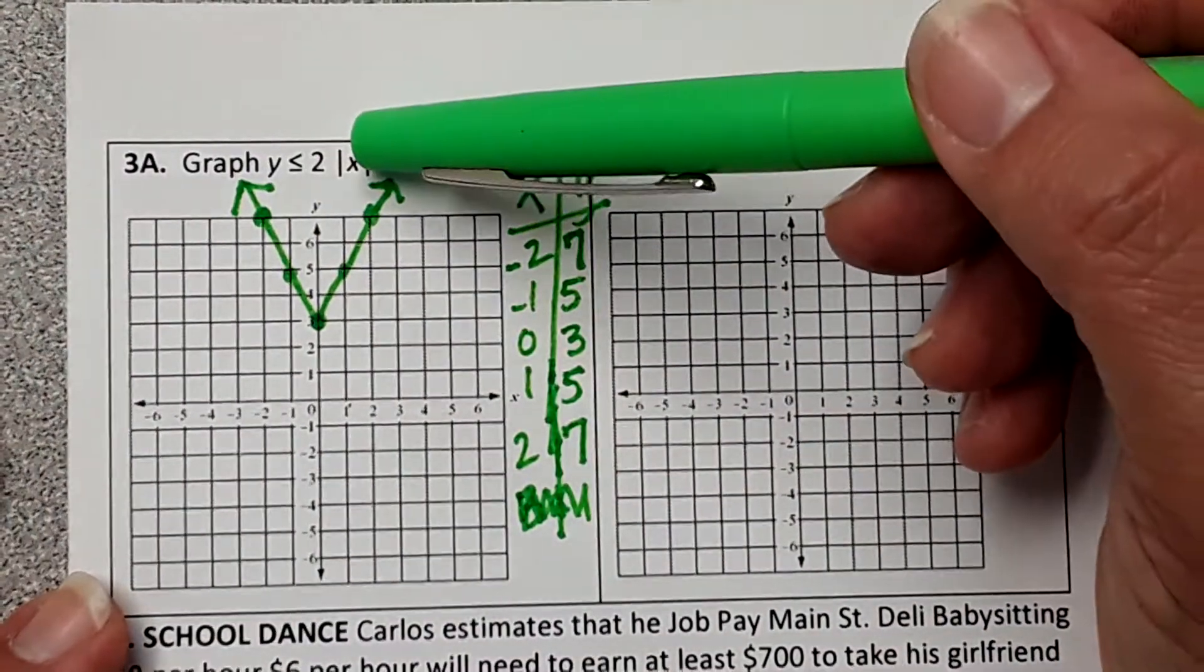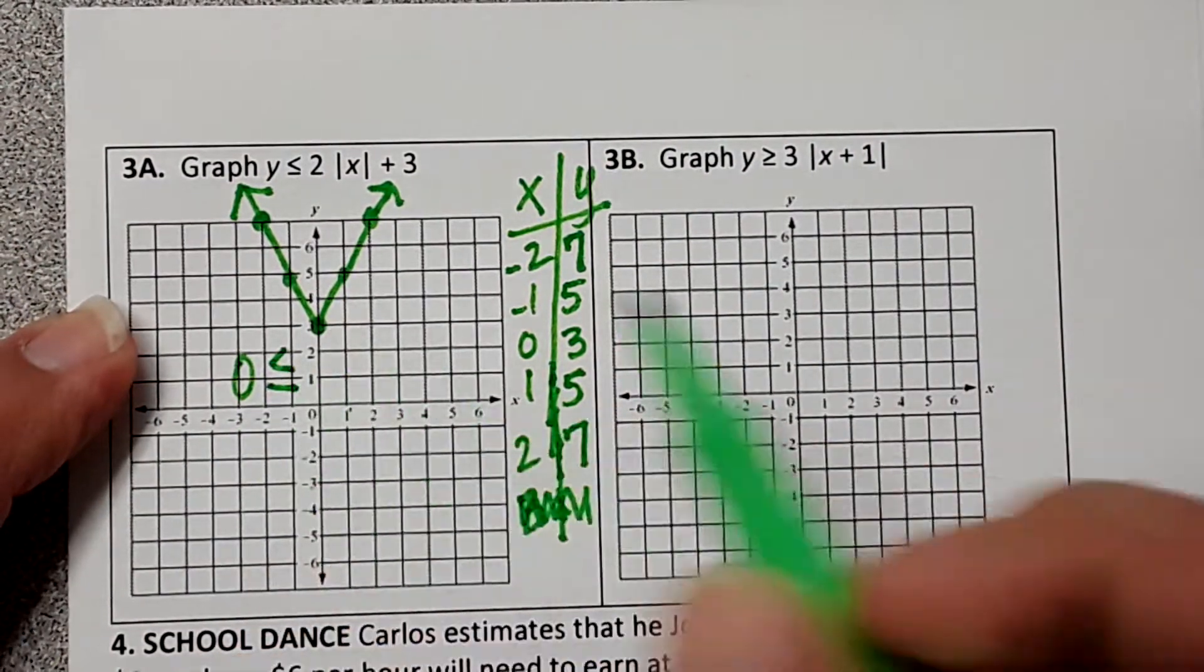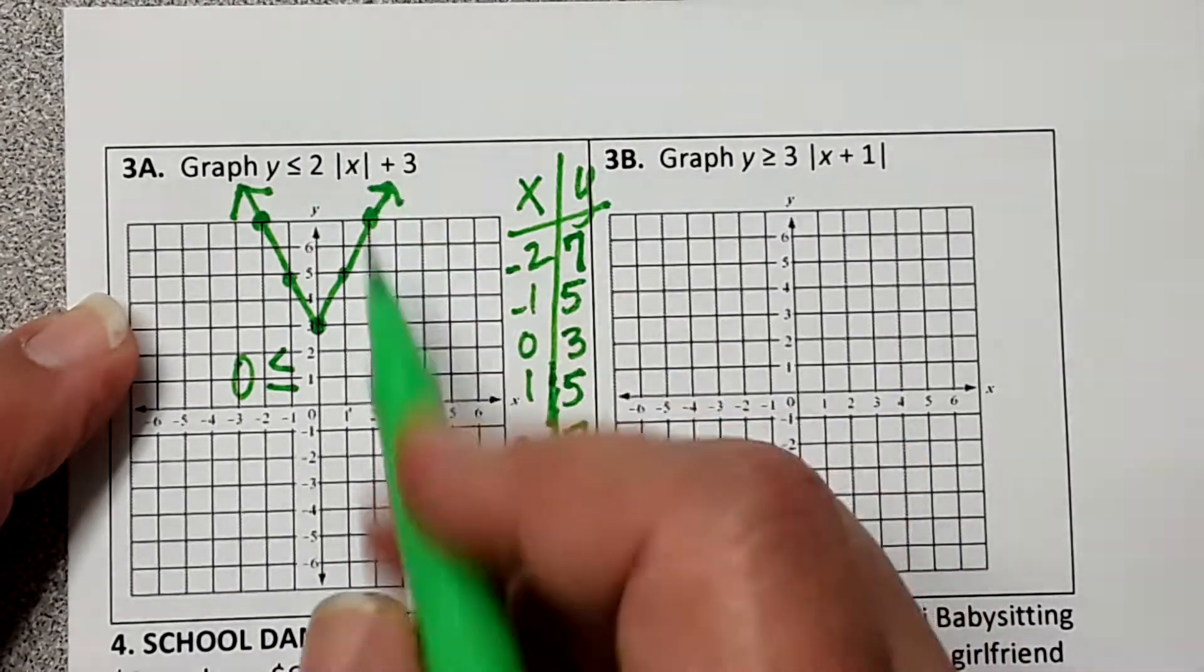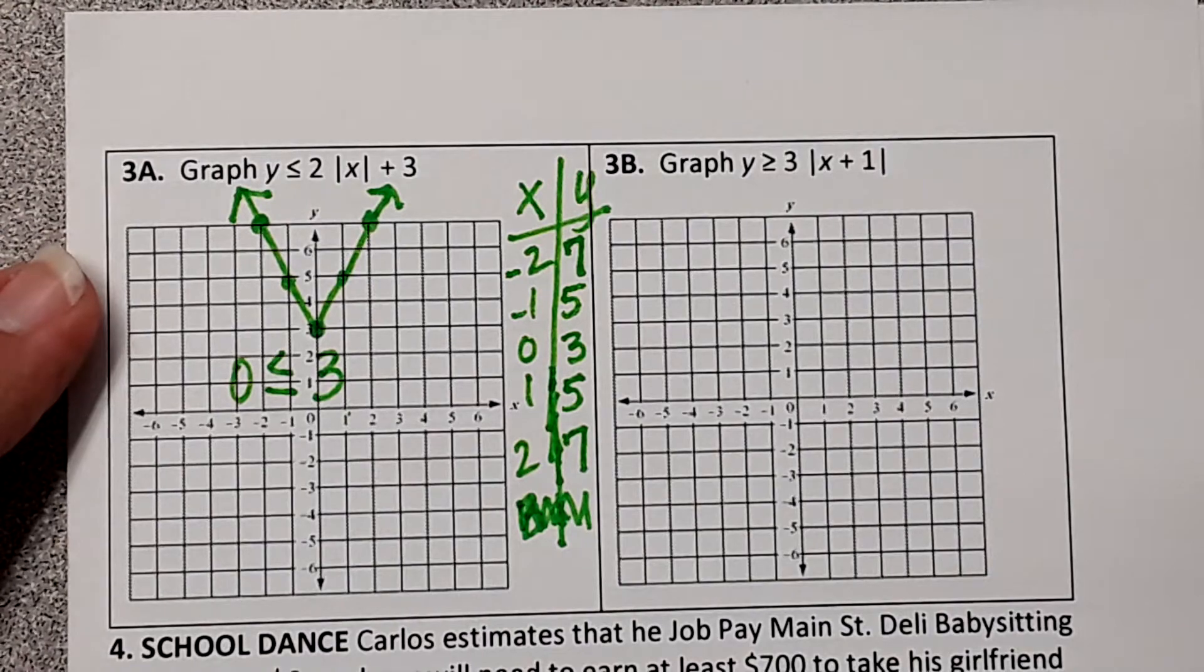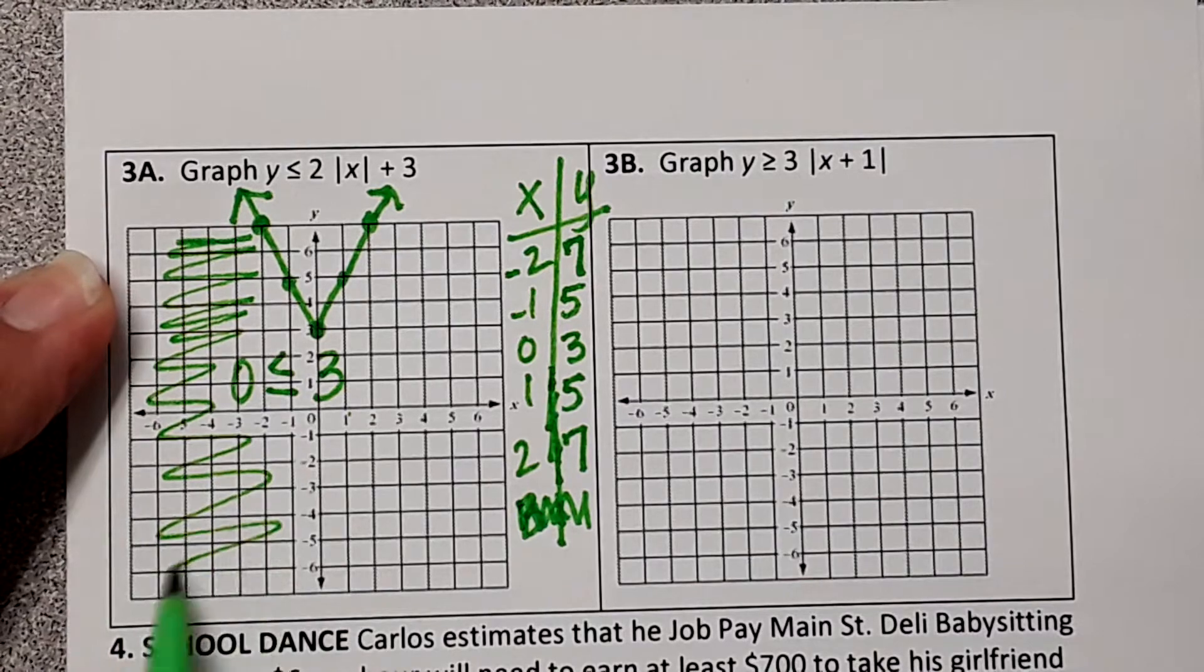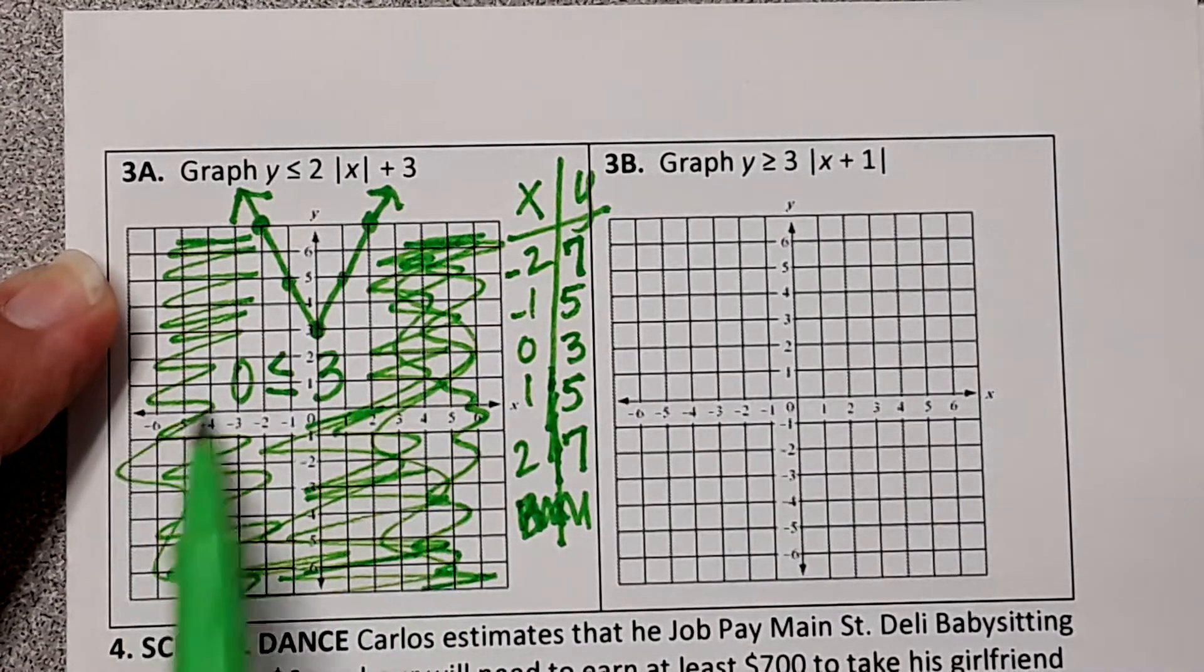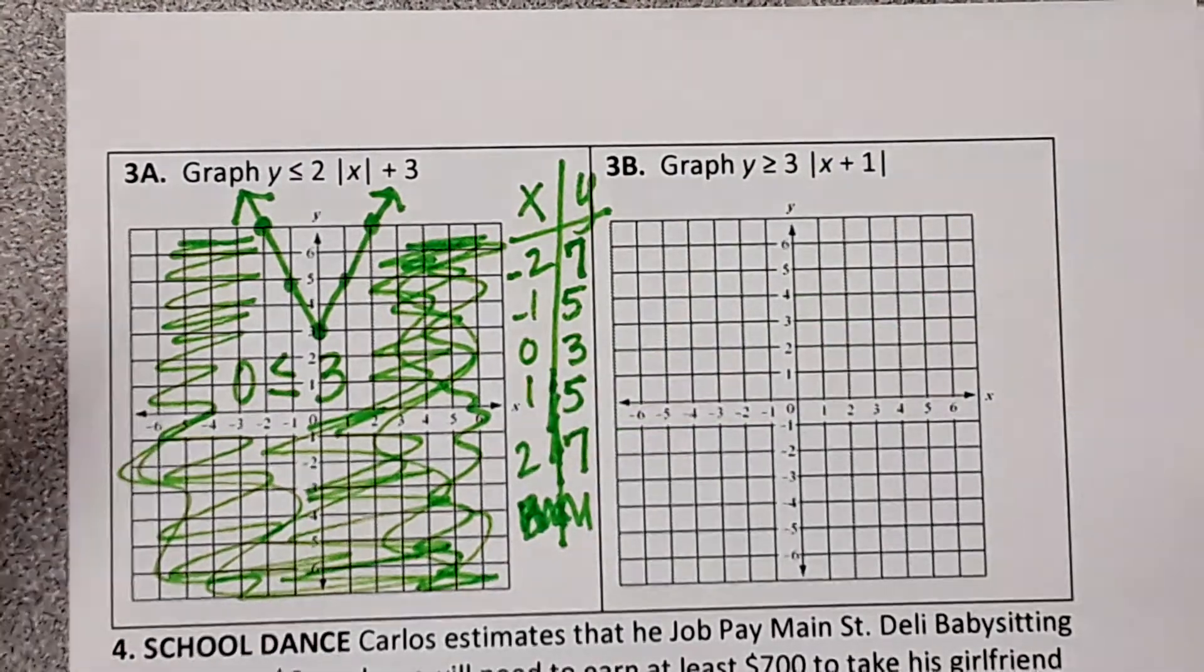0 is less than, well, we already know what happens when we plug in. Oh, so 2 times 0 is 0 plus 3. So is 0 less than or equal to 3? Is that a true statement? So this is where 0, 0 is. So I'm going to shade on the outside of the absolute value. So when you shade for absolute values, you guys, you're either going to shade inside the V or outside the V. Those are your two options.